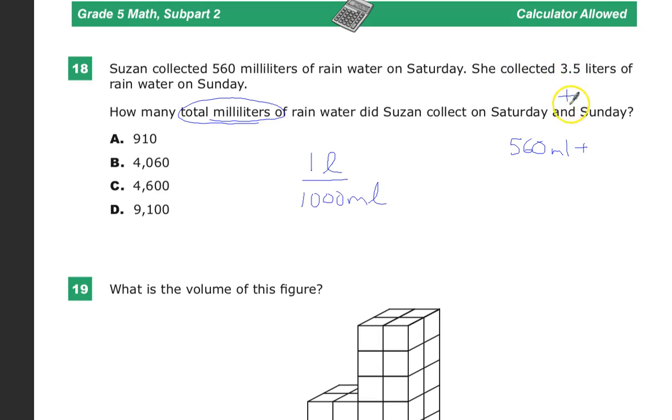One liter is equal to a thousand milliliters. In order to convert 3.5 liters to milliliters, I would just multiply by a thousand. If I wanted to set it up in a conversion factor, since 3.5 liters is on top, and any whole number that you have can be made into a fraction by making it the numerator with a denominator of 1. So, 3.5 over 1.